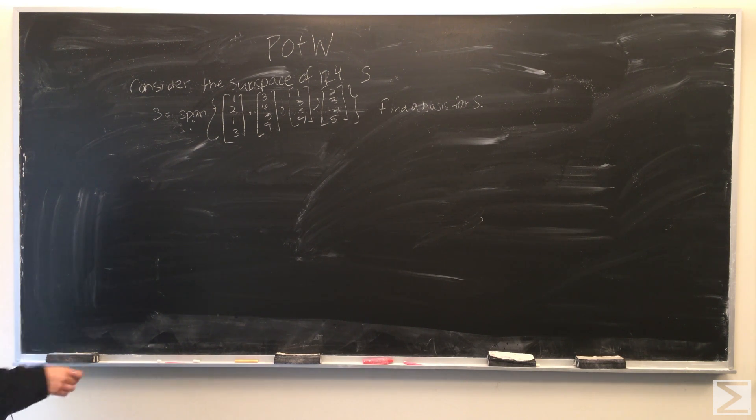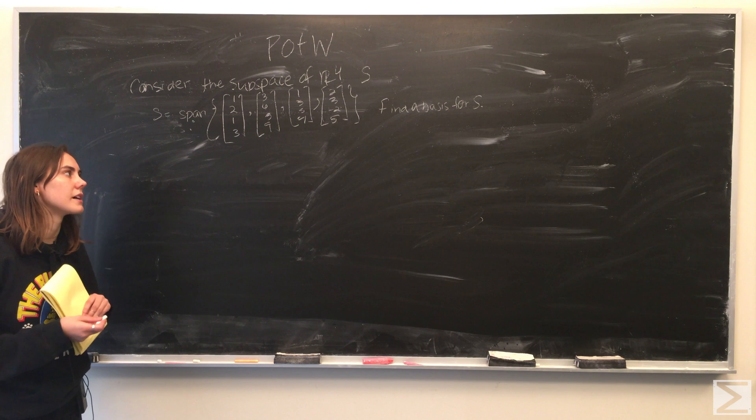S is equal to the span of the vectors [1,2,1,3], [3,6,3,9], [1,3,5,4], and [2,3,-2,5]. And then we're asked to find the basis for S.